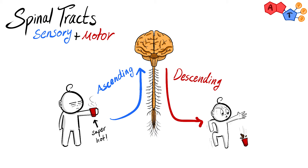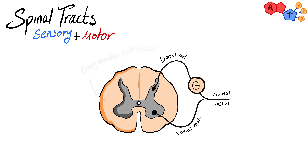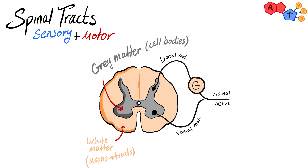Before talking about each ascending and descending pathway, let's have a closer look at the spinal cord. Here is a cross-section of the spinal cord. If you remember, we have gray matter and white matter. The gray matter is where cell bodies are located, while the white matter is where their axons are, making up the tracts. These axons are highly myelinated, thus the color is white.